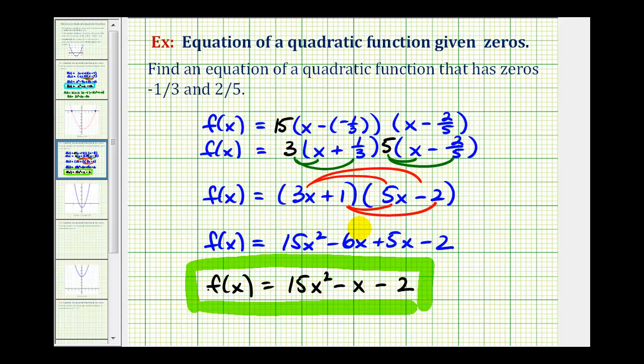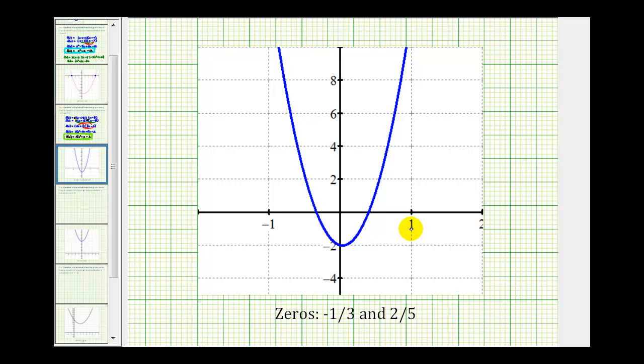And for the last step, we can go ahead and graph this function to make sure it does cross the x axis at these two values of x. Here's a graph of our function. Notice how the x intercept here looks like it is negative one-third, and the x intercept here does look like it's about positive two-fifths.